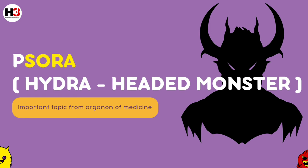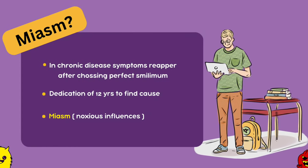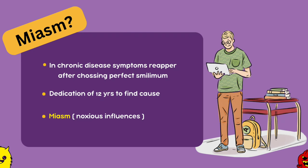In this video, we will try and learn in detail about the Psoric Miasm and how its understanding has developed over the history of Homeopathy. Dr. Hahnemann was having a great practice since he developed the Law of Similars from 1790 to 1820. But during his practice, he found that most of the chronic diseases were getting relief, but the symptoms would relapse even after closely administering a perfect similimum.